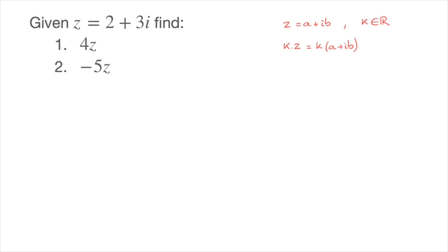All we have to do to multiply z by k is distribute this k across the parentheses. In other words, k times z is equal to ka plus i times kb. And that's the rule. So using that rule, let's go ahead and answer these two questions.